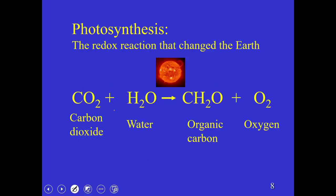Photosynthesis—hopefully a review for you—is the fixation of CO2 to organic material with the help of water. Water is really important not only as a medium for these organisms to grow in, but as a source of electrons that eventually make their way to oxygen. It's the reaction that changed the earth for two things: first, it provides organic carbon that supports all other organisms on the planet including us, and second, it produces oxygen, which has a huge impact on the geochemistry of the entire planet.